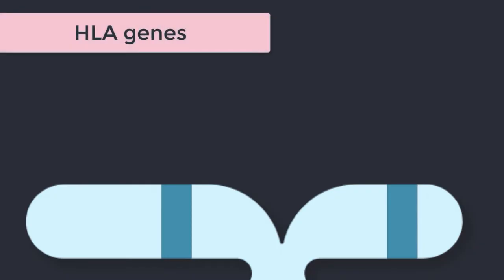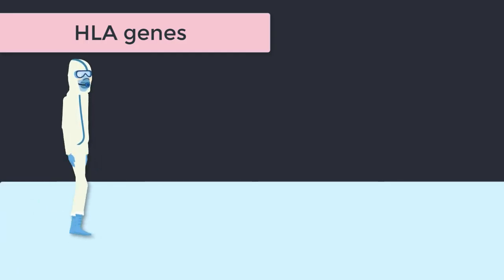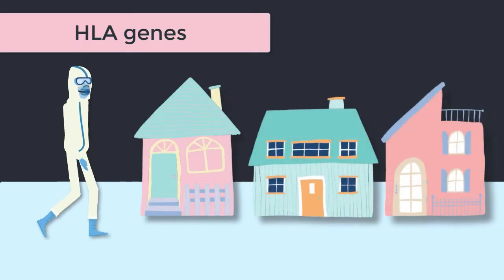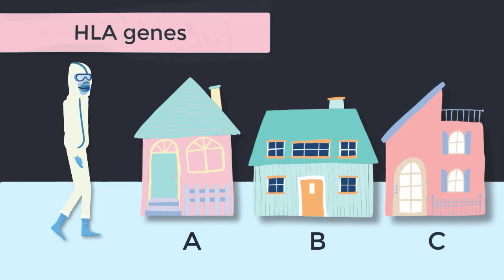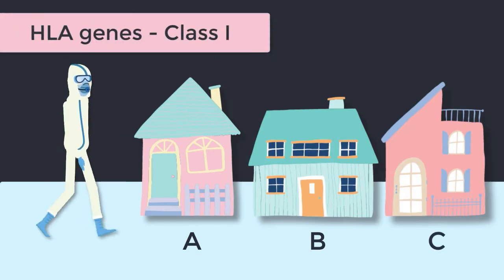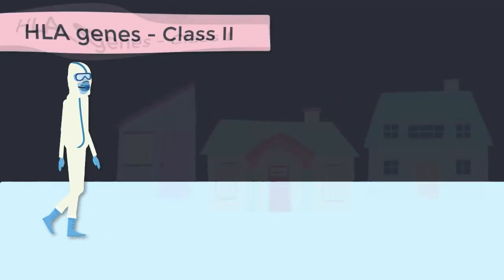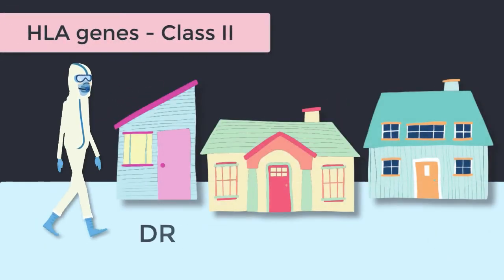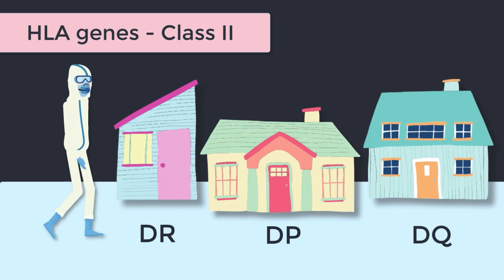For the HLA genes we know the genetic address is on chromosome 6. If we were able to go for a walk along this area we would see a row of houses labelled HLA-A, B, and C — these houses represent the genes for the MHC1 molecules. We then see another row of houses a bit further along: DR, DP, and DQ, and these represent the genes for the MHC2 molecules.